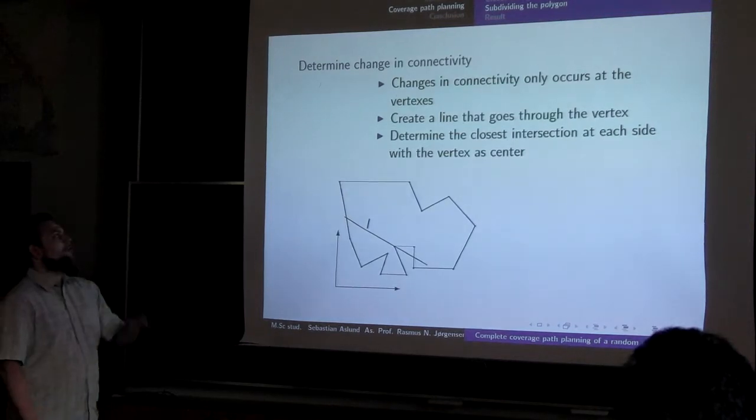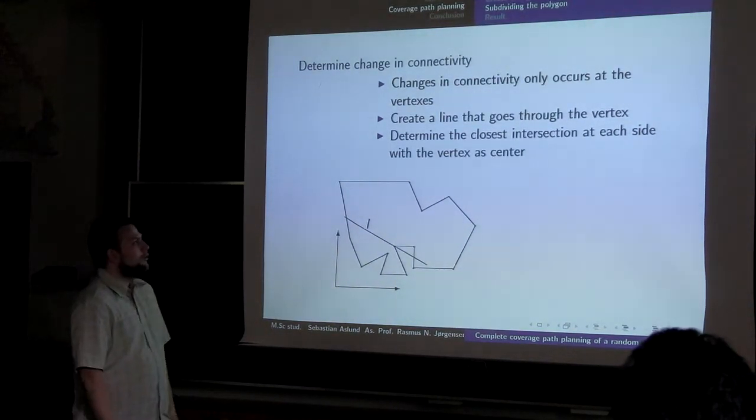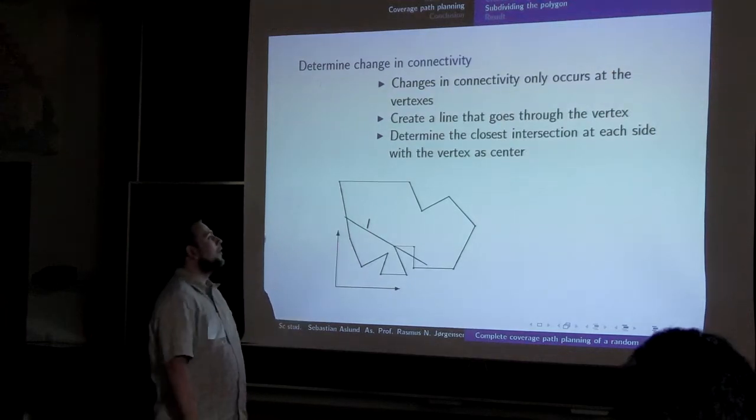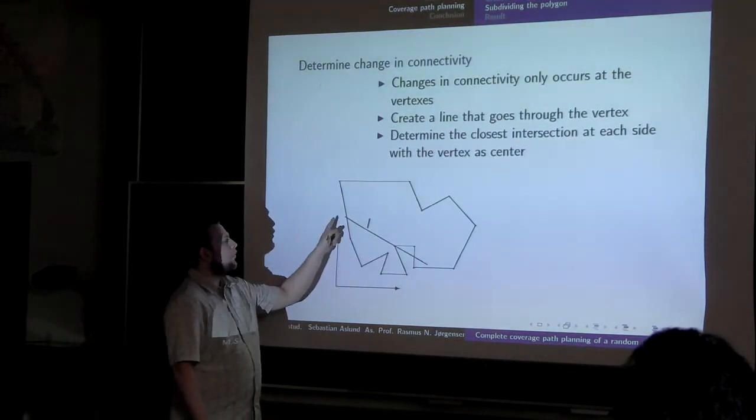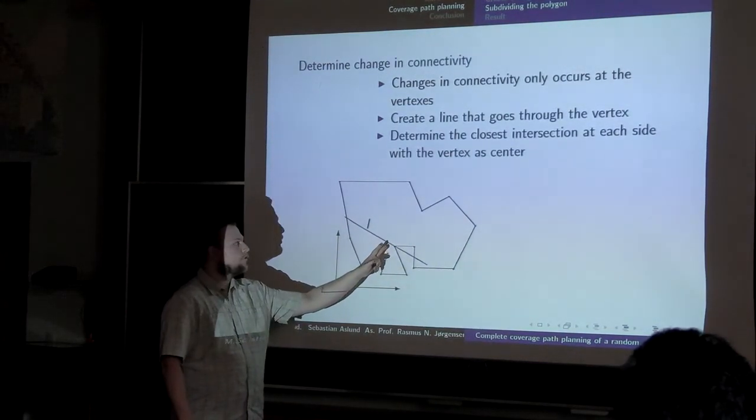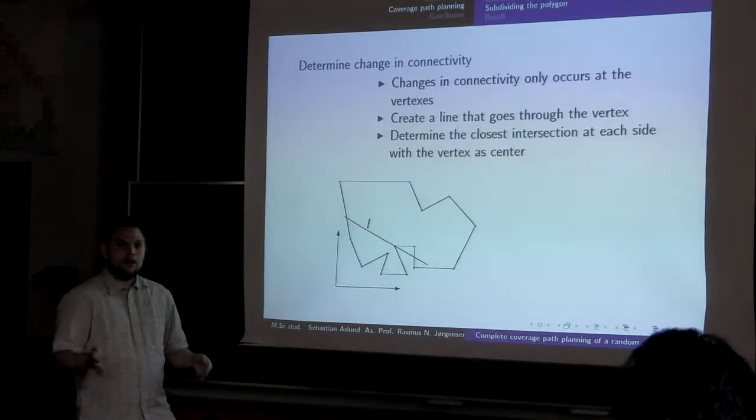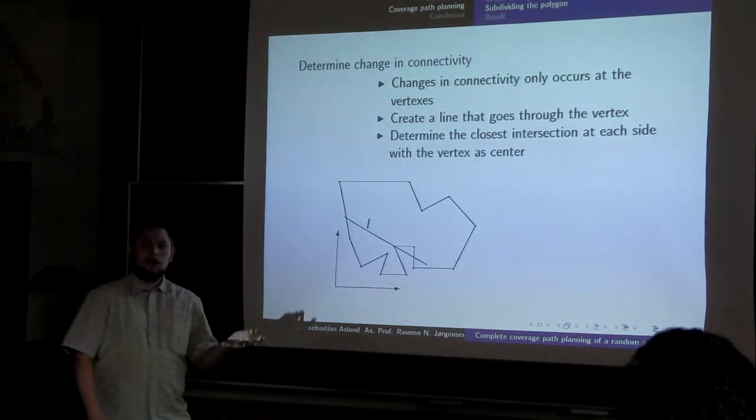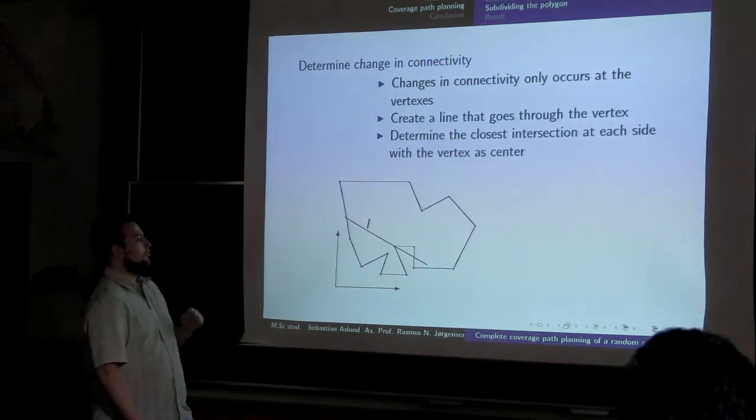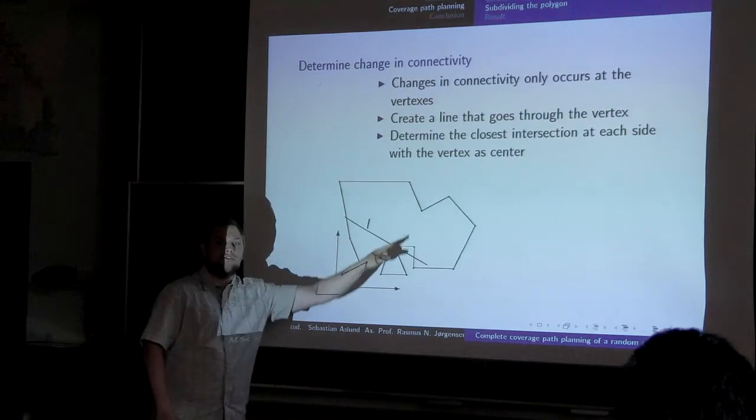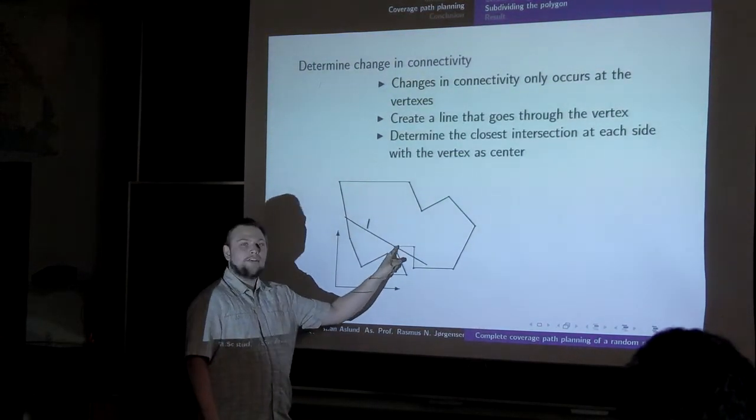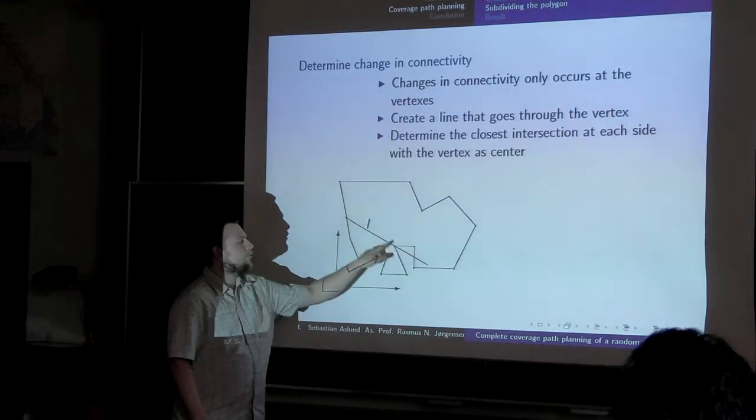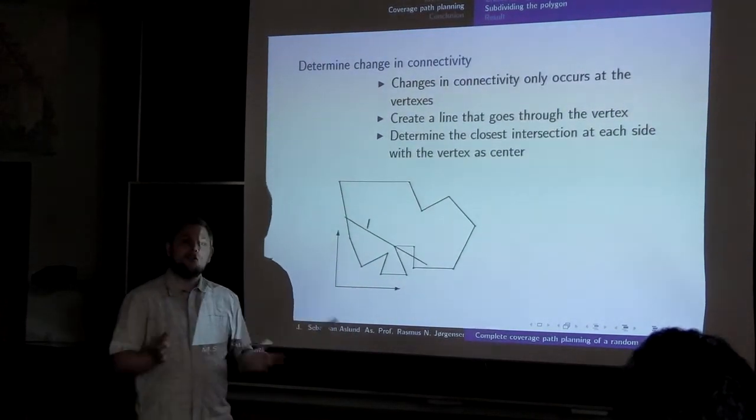How do we do this? I was noting that changing the connectivity only occurs at vertices. So what we do is we create a line through a vertex in the processing direction we are defined by the user. Then we determine the intersections on both sides of the line with the vertex as the center point. Of course if you have only one intersection at one side, then we have no change in connectivity and thus no need to subdivide. In this case here, we have two intersections. Is that enough to ensure that we have a change in connectivity? As you can see here, this part here is inside the boundary of the polygon, but from this one here it is actually outside, making it not valid. So actually we need a way to determine whether the line from the vertex to each of the intersections is outside or inside the boundaries of the polygon.